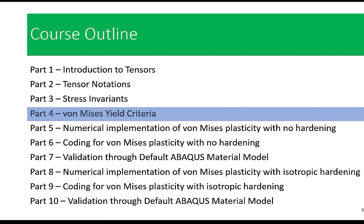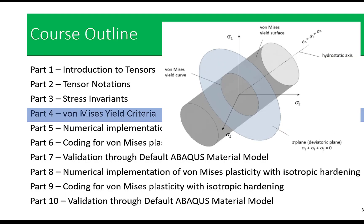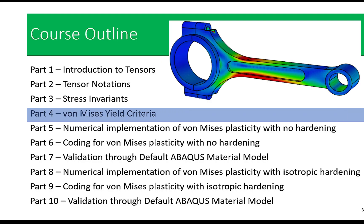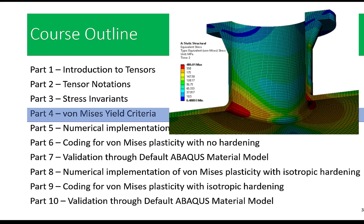In part four, we will introduce you to the Von Mises yield criteria, a fundamental concept in material science. We will explore its applications in determining the yield strength of the material. The Von Mises criterion is a cornerstone in material design and analysis, providing valuable insights into when materials will yield.